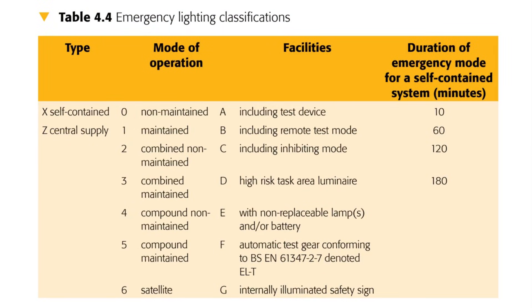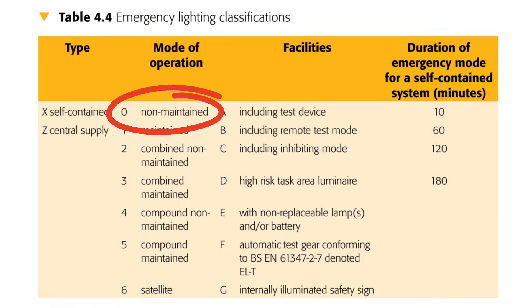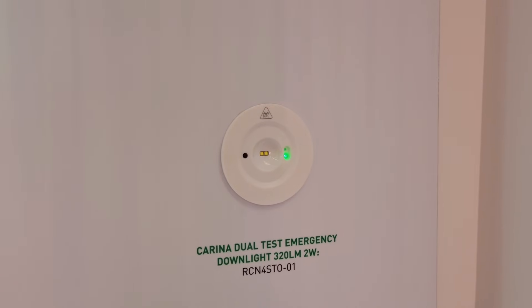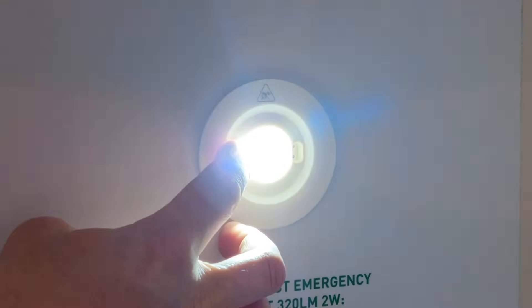In BS5266-1, we find Annex F, which describes seven different modes of operation that emergency lights can operate under. These are reproduced in Table 4.4 of the Electrician's Guide to Emergency Lighting, and each one is given a number from zero to six. Mode zero is non-maintained. This means the fitting is never illuminated as long as the supply is healthy. When the supply fails due to a power cut, a fault that operates the circuit protective device, or some other reason, the battery inside the light fitting will connect to the light source and keep it illuminated. If the power is then restored, the battery will start to recharge ready for the next power failure.